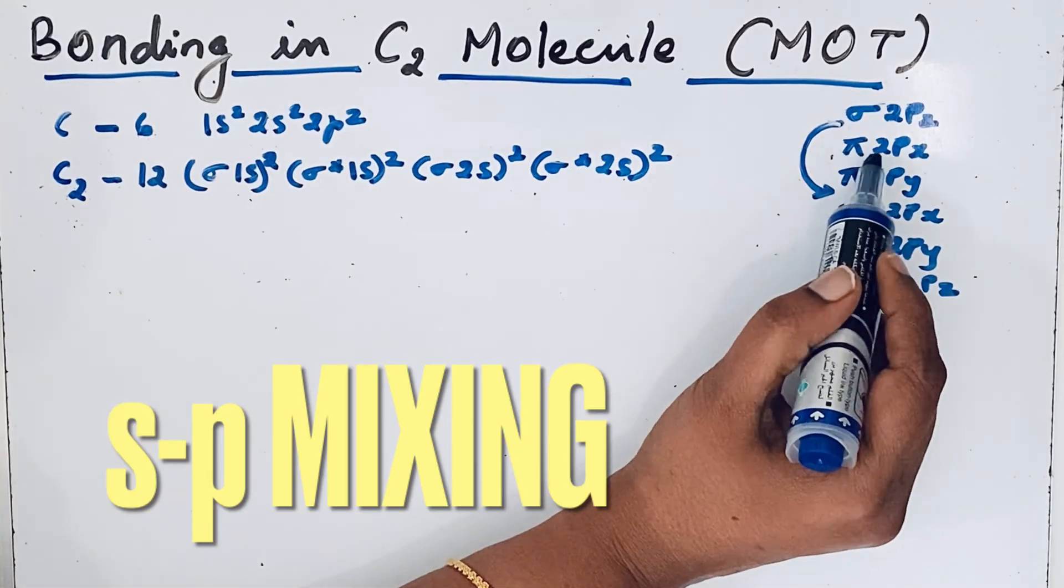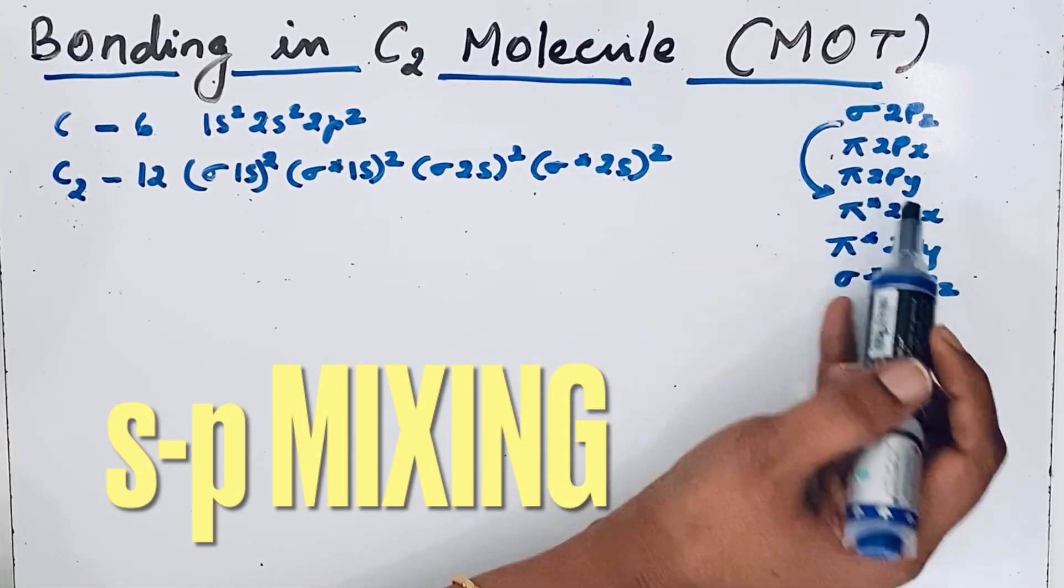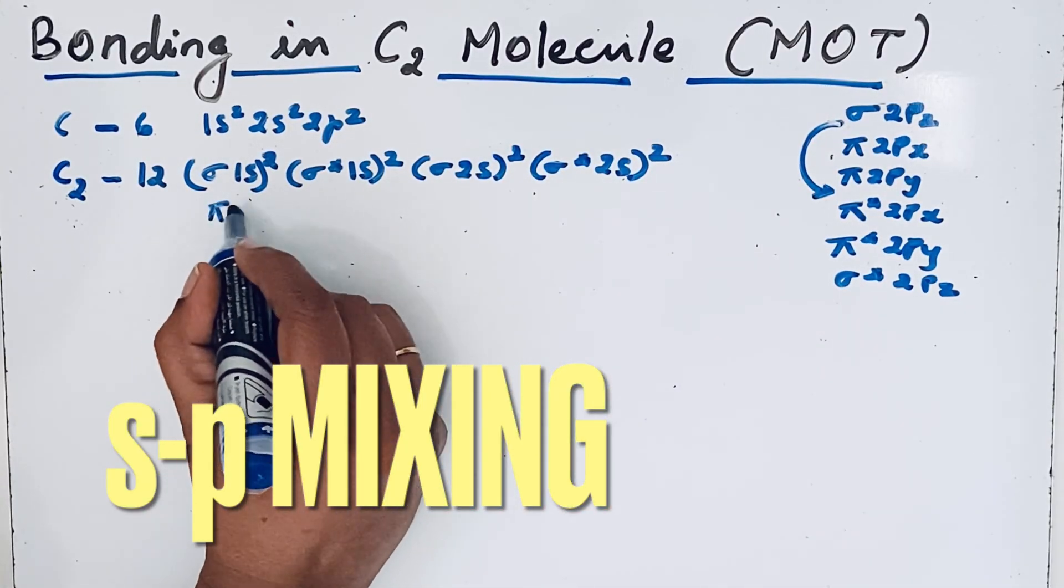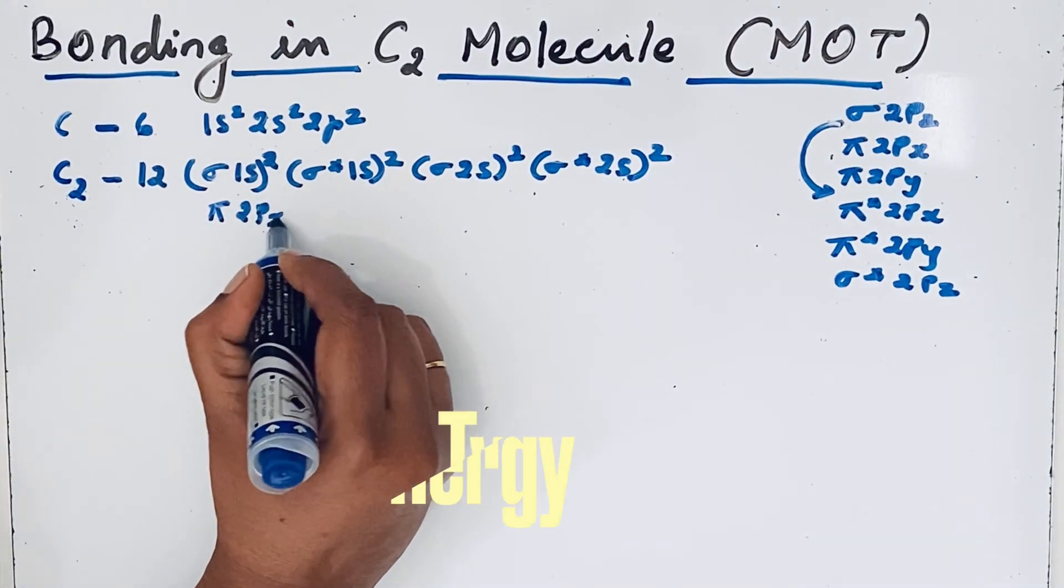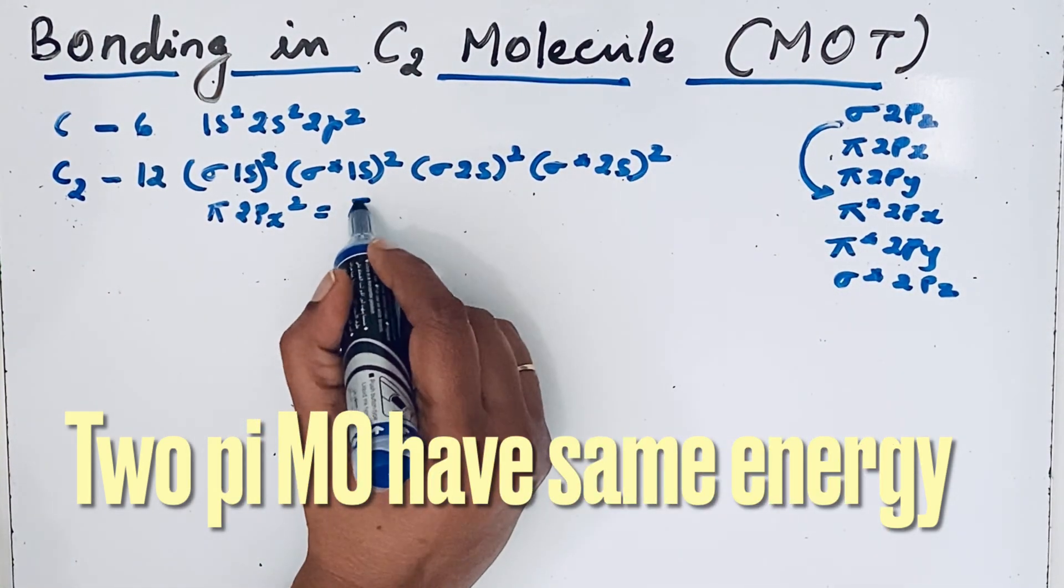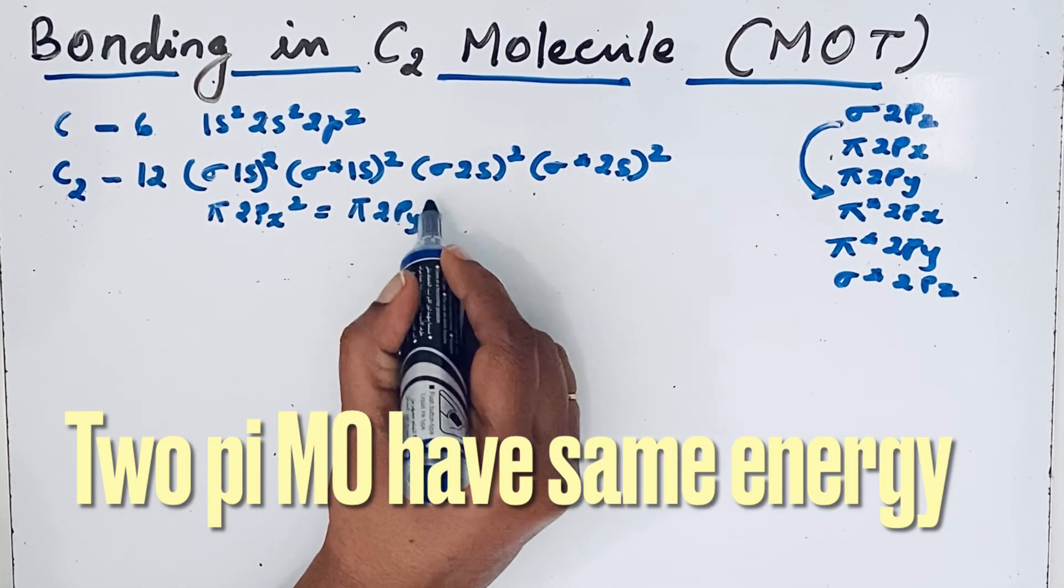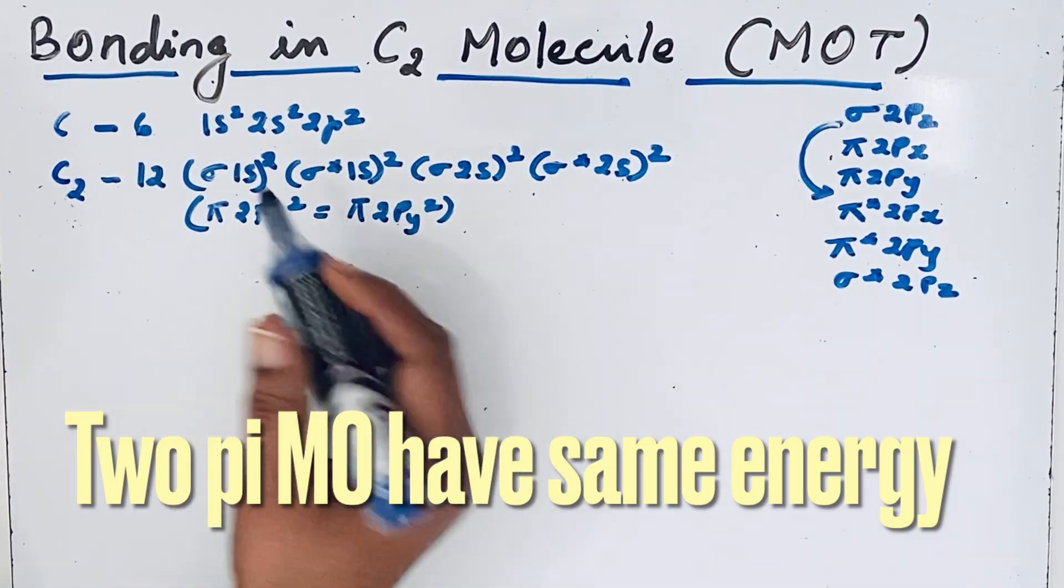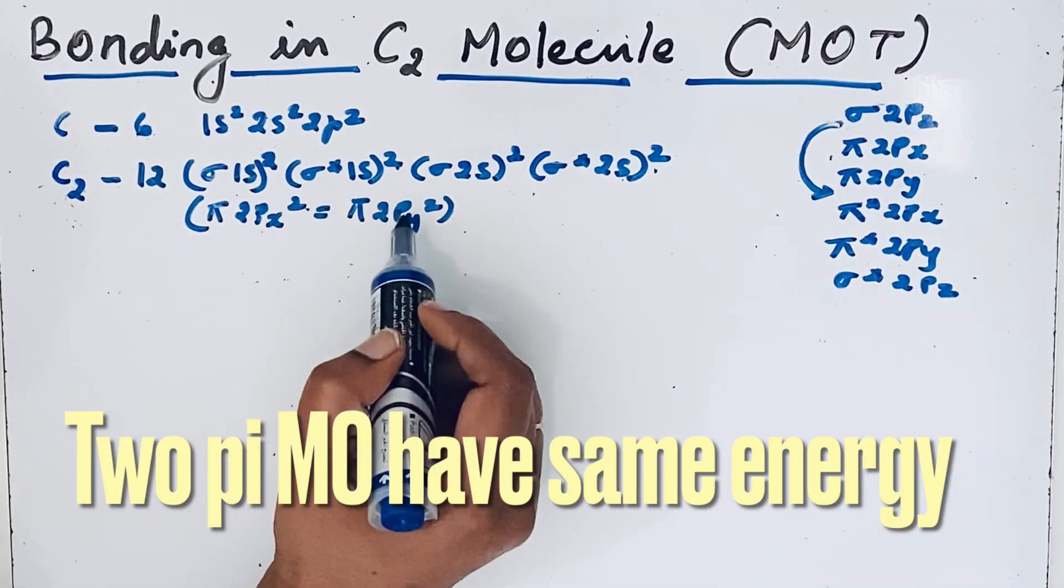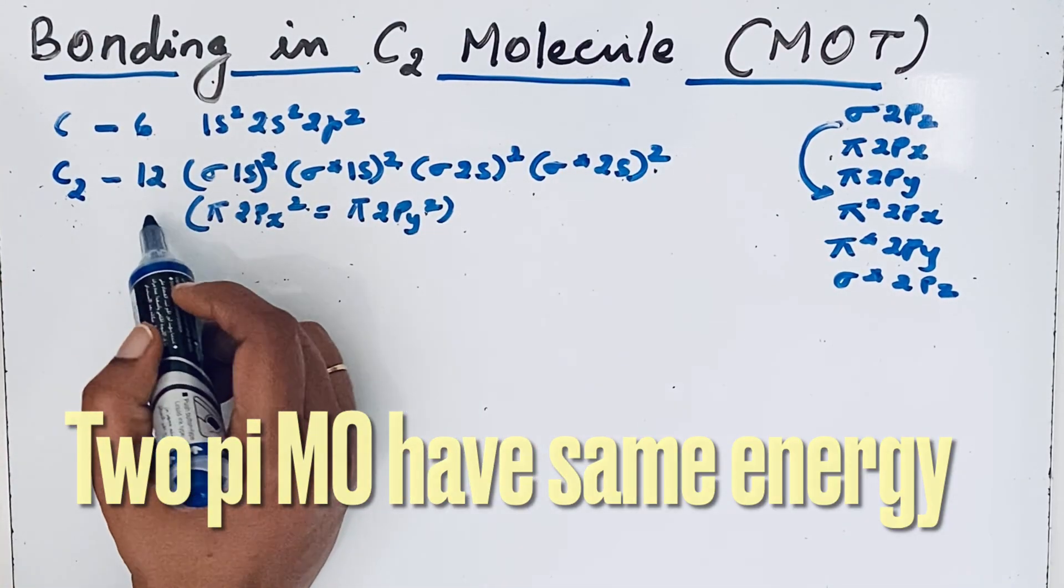We could write π2px and π2py. After this, π2px² equals π2py². Count the number of electrons: 2, 4, 6, 8, 10, 12. Total 12 electrons are present.